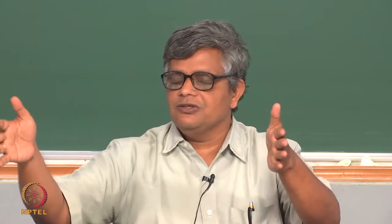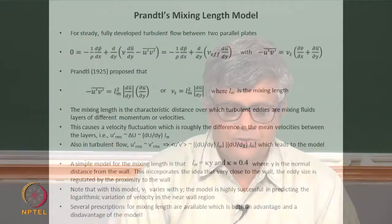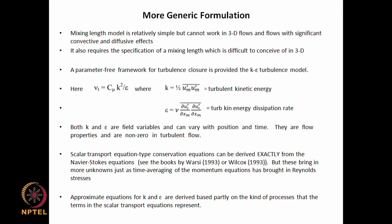Far away from the mesh you may have no velocity gradients, yet turbulence is there because it is being brought in from somewhere else — it is being advected and diffused. The mixing length model tries to create velocity gradients in order to support the presence of turbulence stresses. So when you have strong advection and diffusion effects, the mixing length model will not work. These are well-known disadvantages of the mixing length model, and people have therefore worked to come up with a parameter-free framework for turbulence.